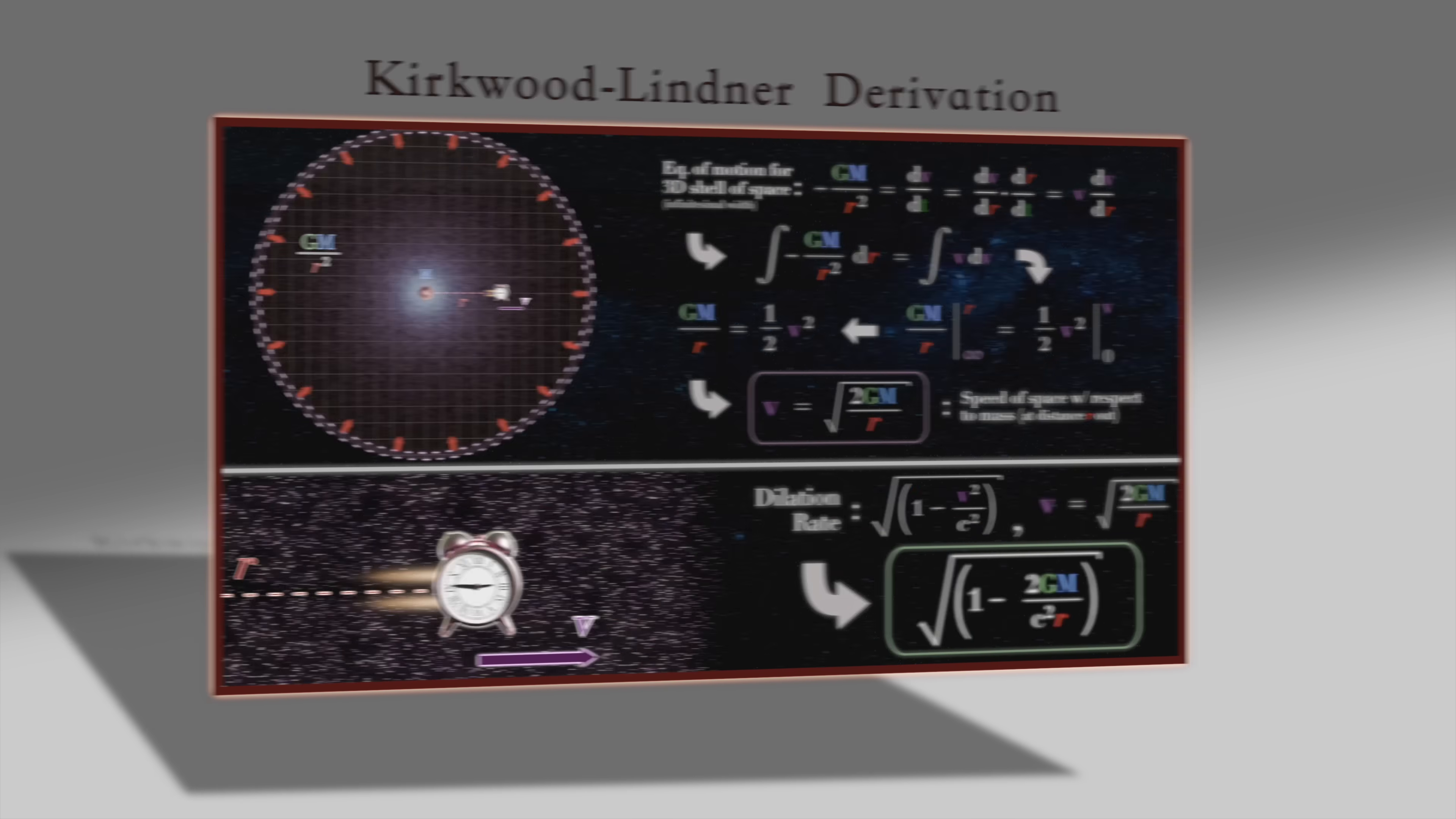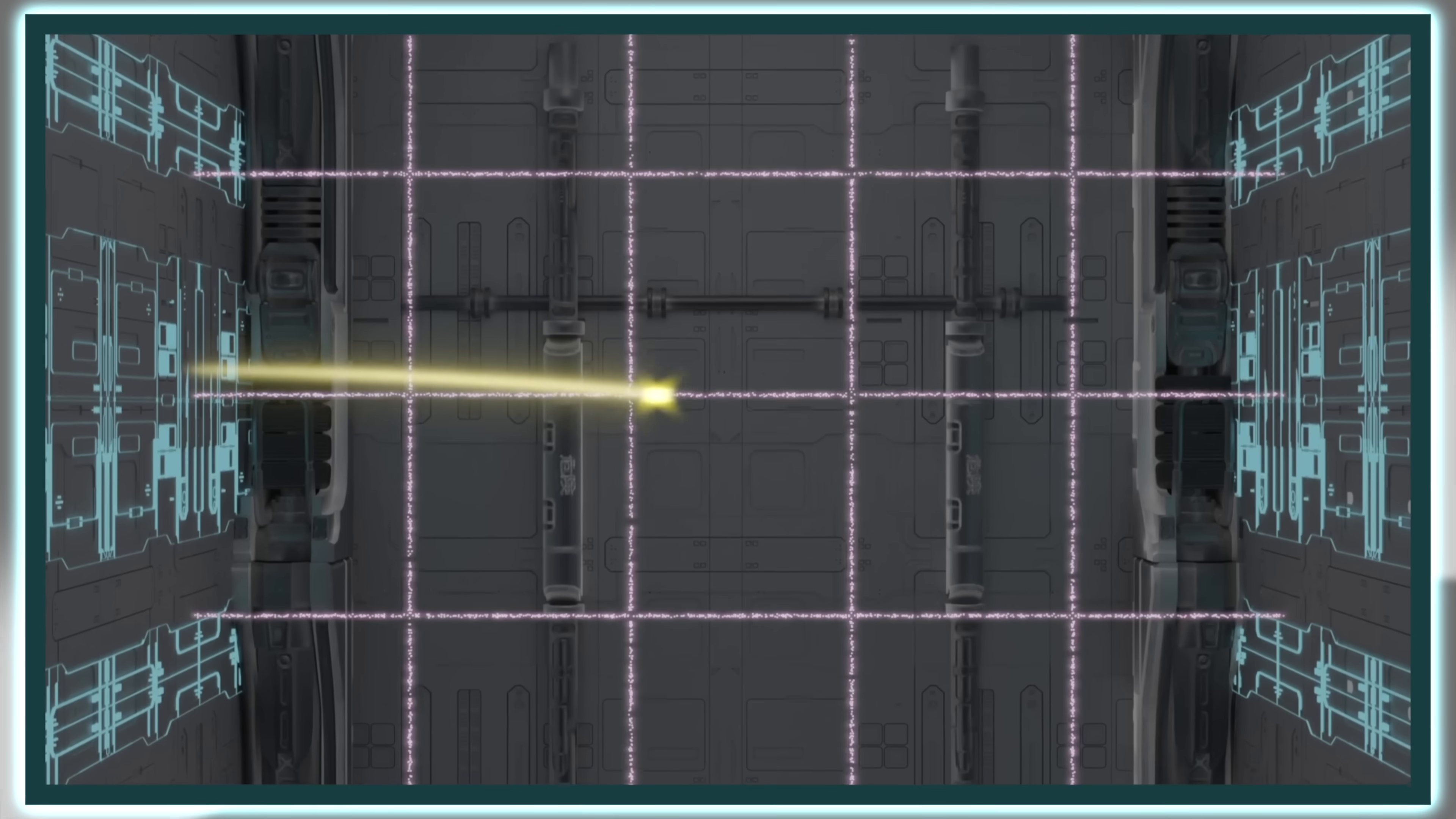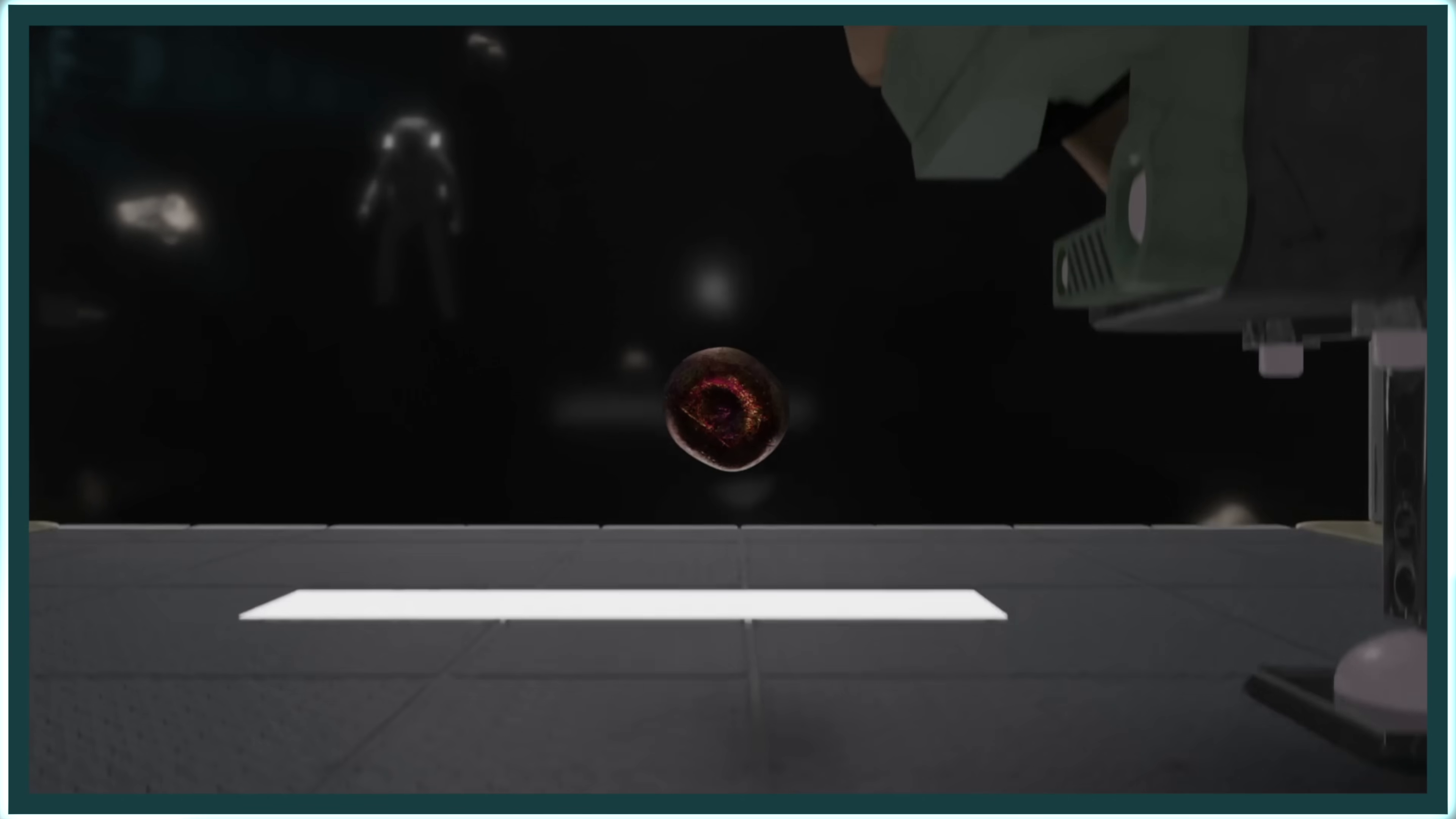Now, as we've discussed in a prior video, the river model offers a number of other powerful insights into general relativity which are not accessible via the standard geometric interpretation, insights such as the meaning of the equivalence principle or the nature of tidal forces.